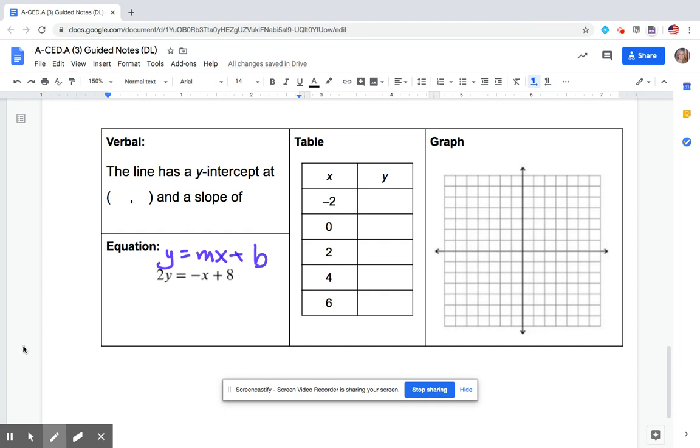So hopefully you knew to divide everything by 2. Now I can jump right from here to my graph because I know the y-intercept is 4, and my slope is -1/2. That's down 1 to the right 2, up 1 to the left 2.